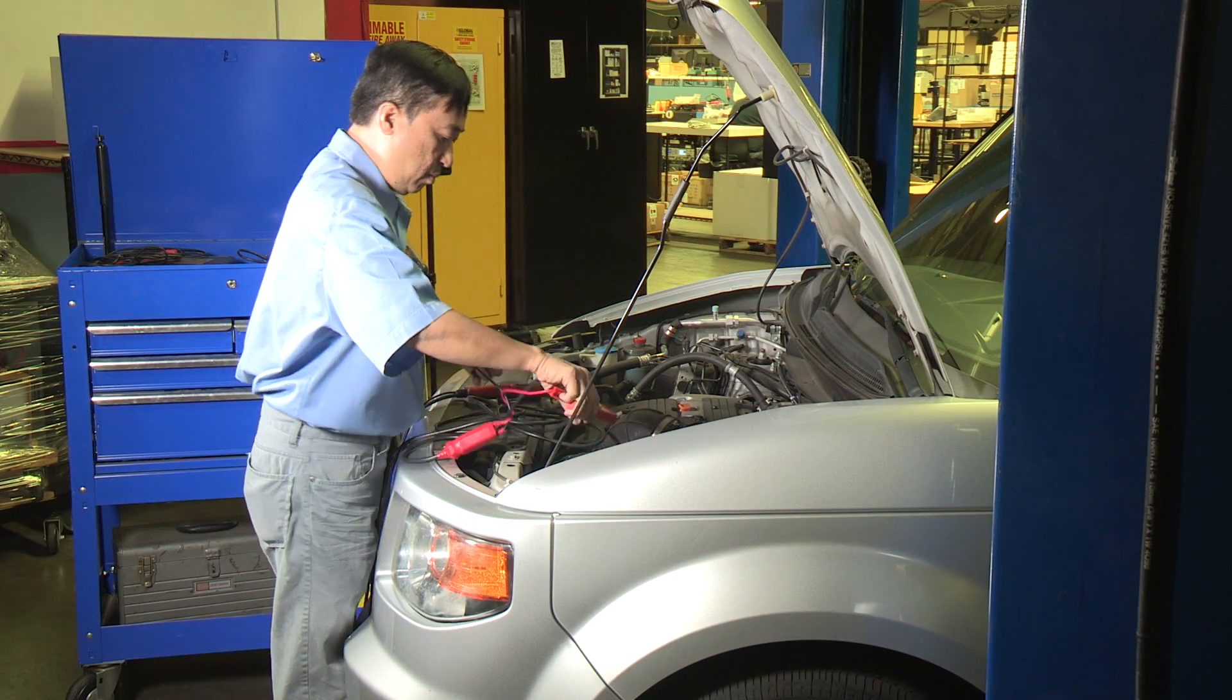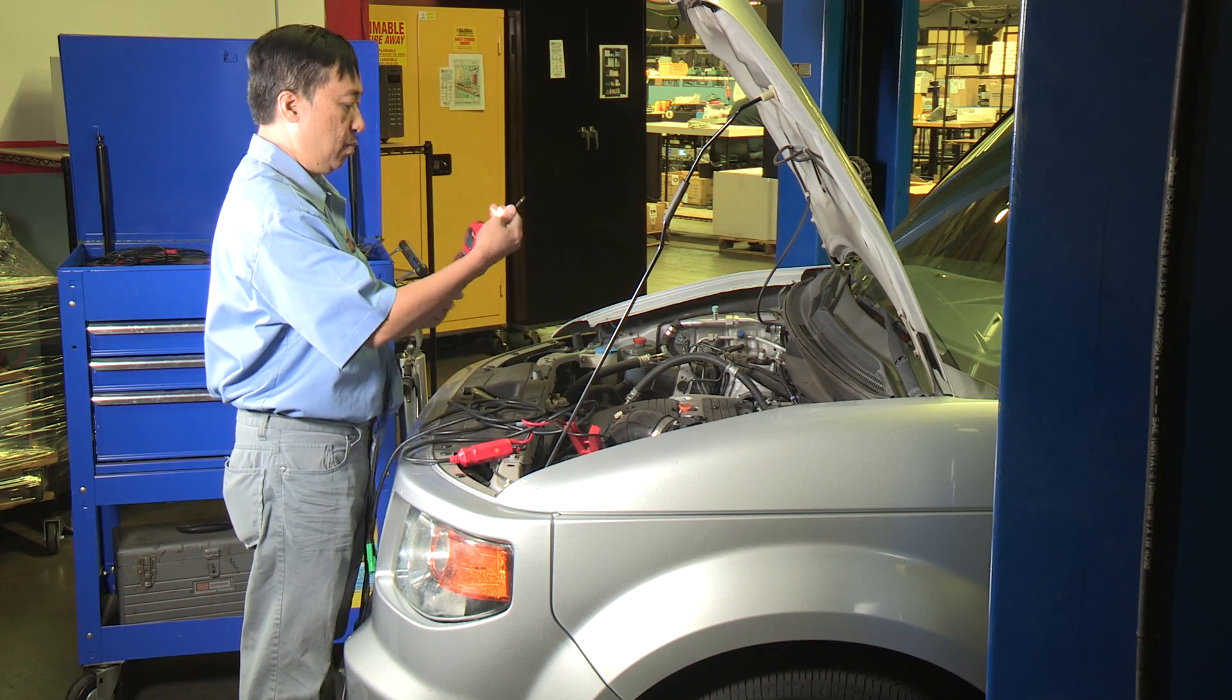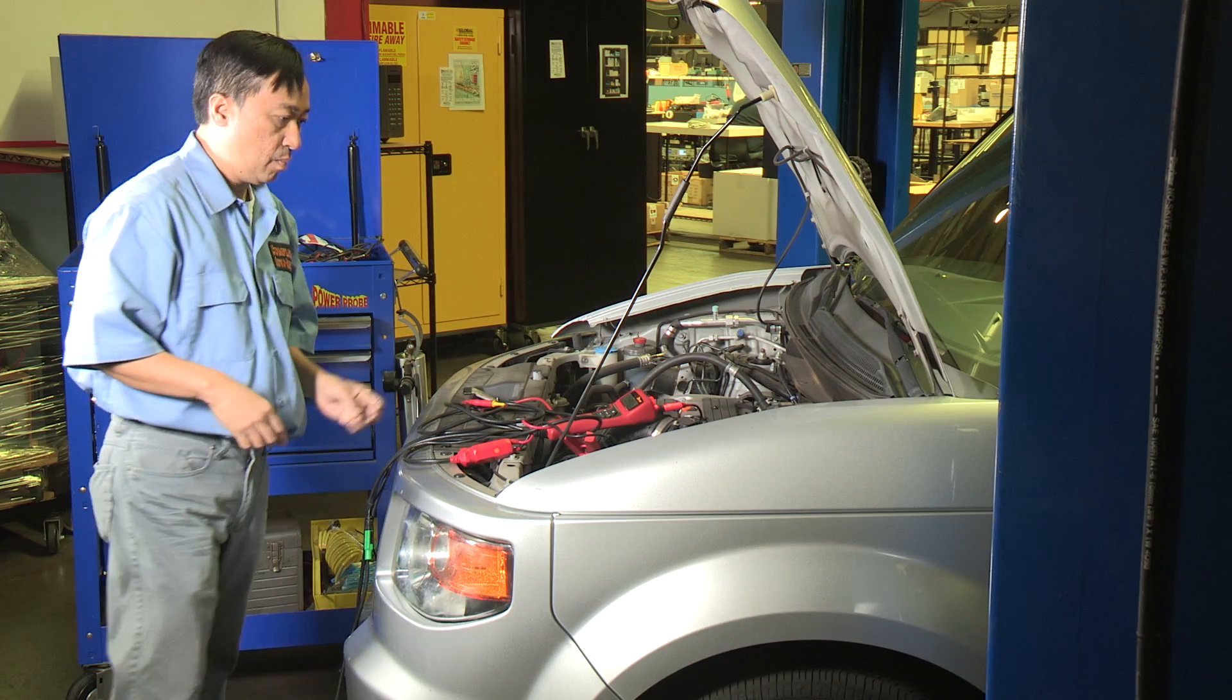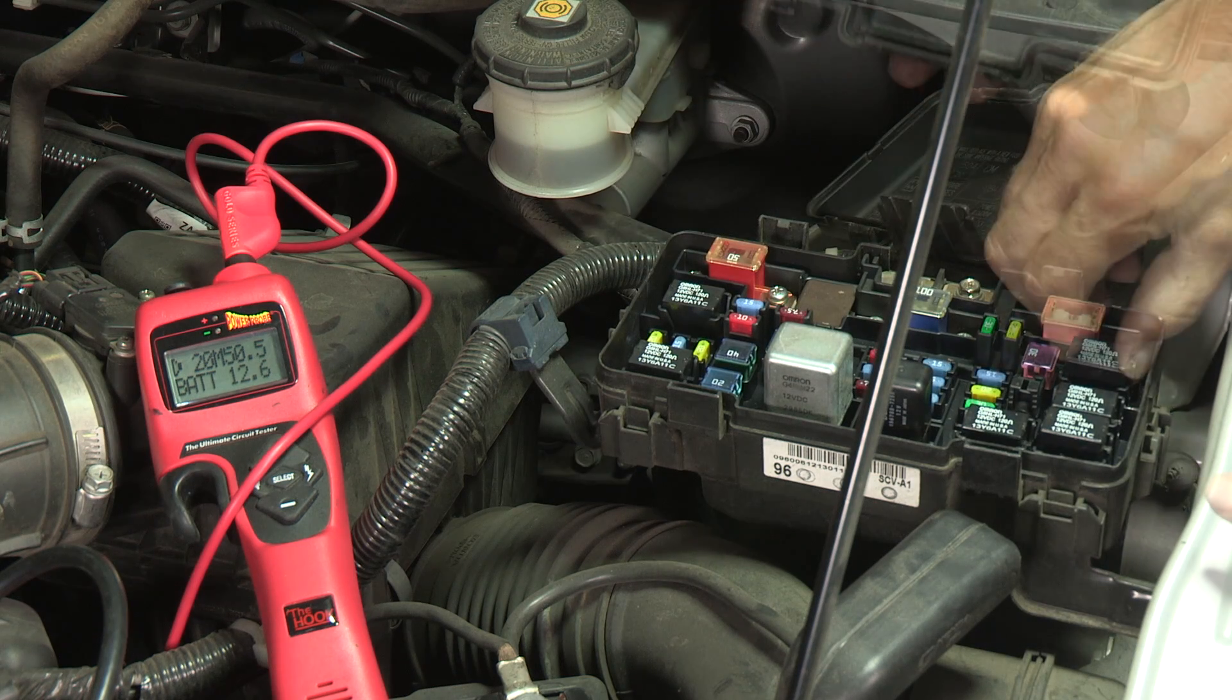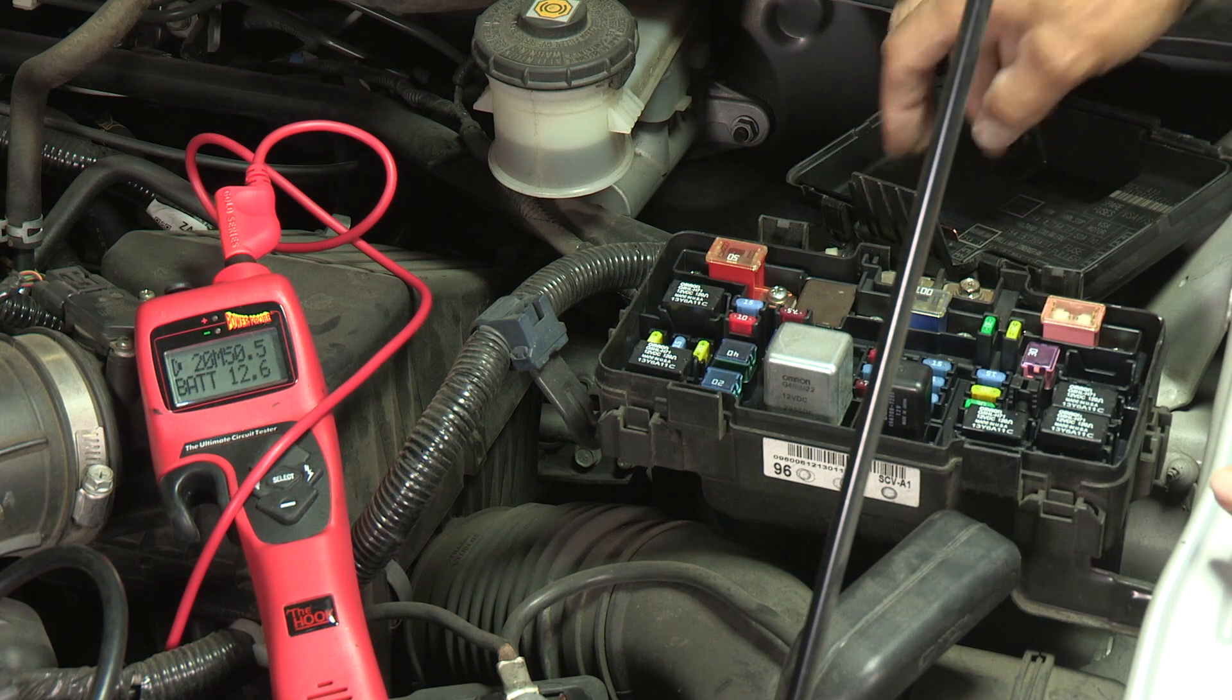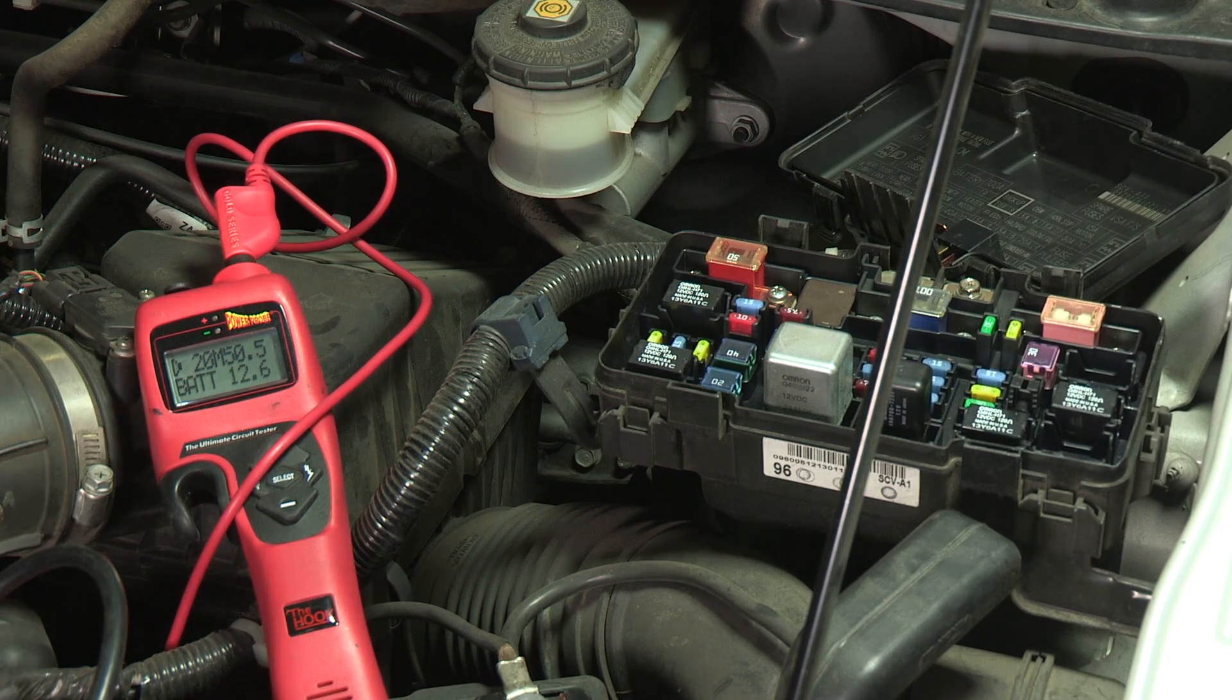Let's start by connecting the power probe hook to the vehicle's battery. For easy access to the circuit, we will remove the probe tip and install the three-foot lead with the back probe adapter. Now, locate the vehicle's relay box, which is under the hood on this vehicle. Remove the cover to expose the relays. Find the relay that controls the condenser fan and remove it. We'll also remove the radiator fan relay. This will keep the radiator fan from operating during testing.